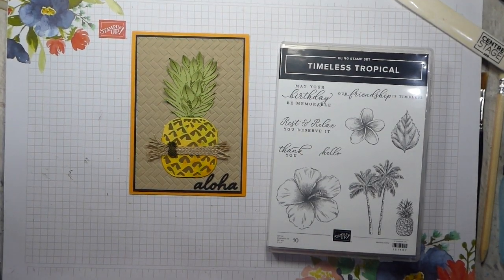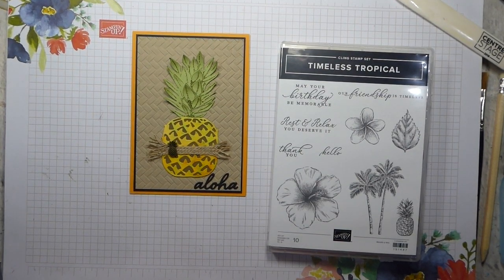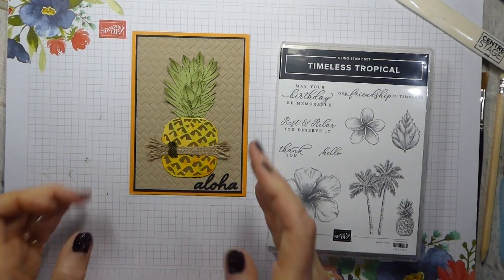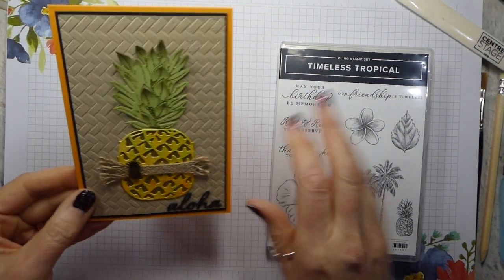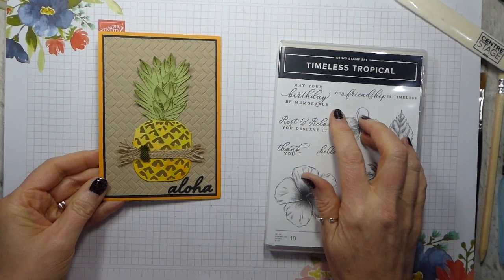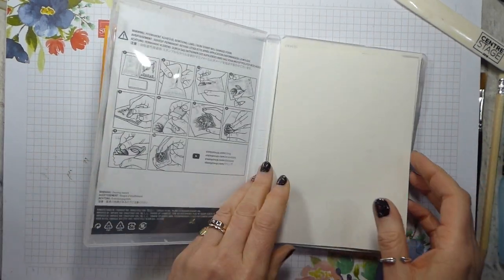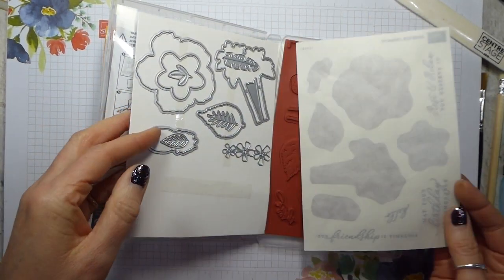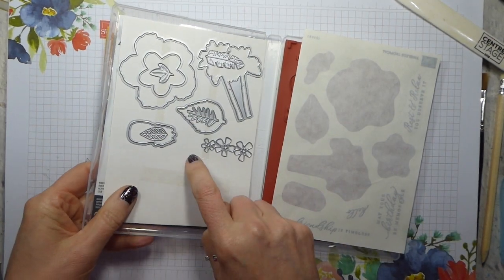Hi there, it's Liz Ull from Old Stables Crafts. Thank you for joining me again today. Today I have got a project for you that uses the Timeless Tropicals bundle, but it also uses the stamp set, which I still haven't finished sticking all the bits on, and the dies.